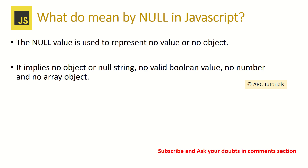What do you mean by null in JavaScript? Null in JavaScript means there is no value or no object. It is not empty — it means the variable has no value or object assigned to it.